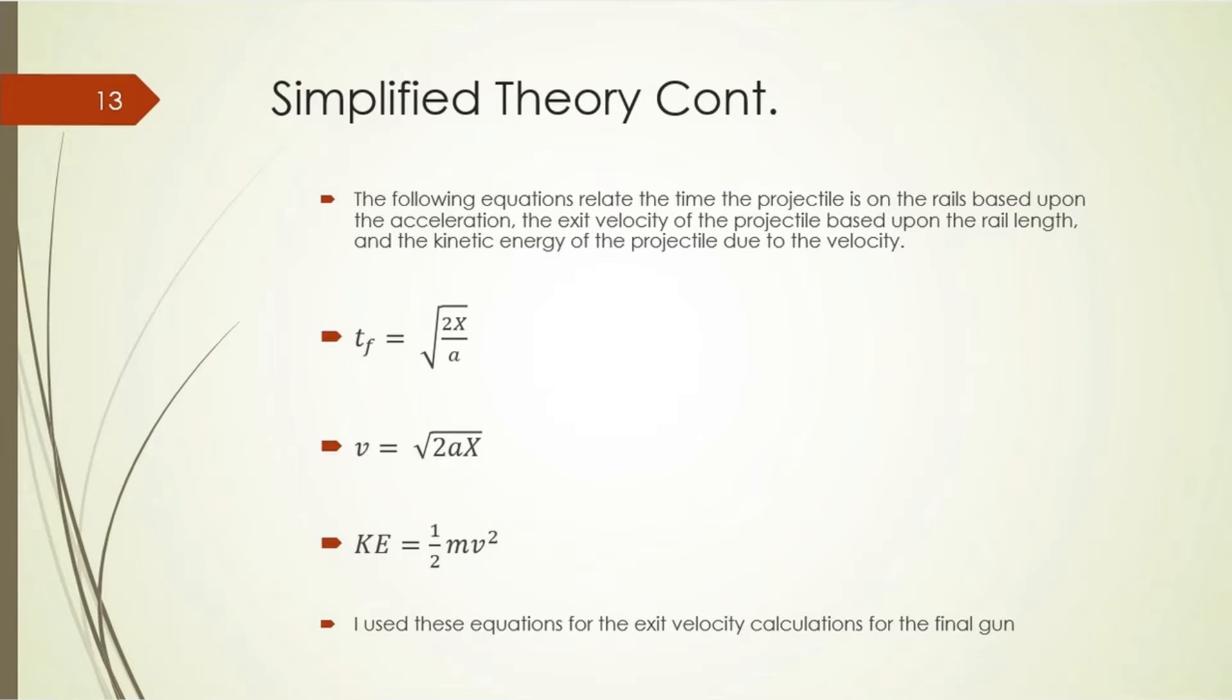With the simplified theory, there are three basic equations that I use for the calculations in my final railgun. The time that the projectile is on the rails, T_F; the velocity of the projectile as it reaches the muzzle of the gun; and the time again for the projectile.